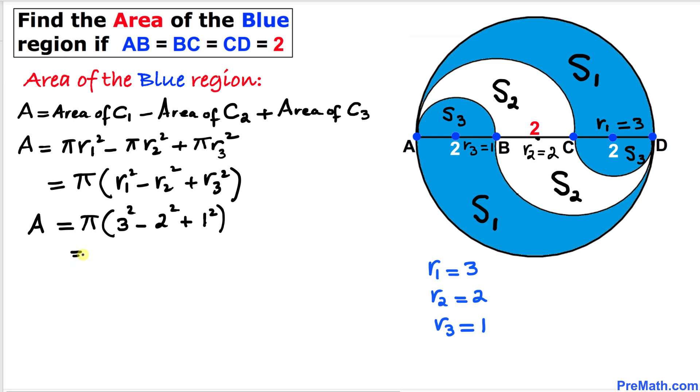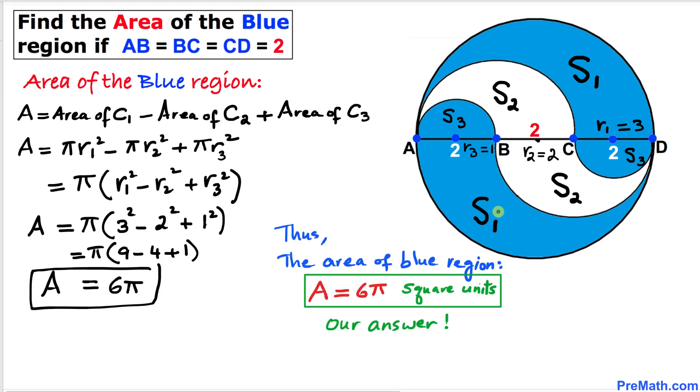This gives us π times (3² is 9, minus 4, plus 1). Simplifying, our area turns out to be 6π. The area of this blue shaded region is 6π square units.